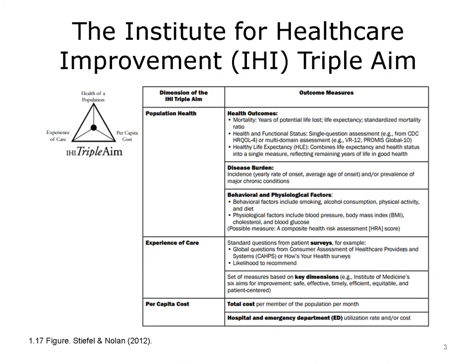One of the reasons that population health has received increased attention in the U.S. over the last five years is that the Institute for Healthcare Improvement, IHI, has made its achievement a top-line mission. This influential quality improvement institute, which most large hospitals and health systems actively participate in, has developed something called the Triple Aim.